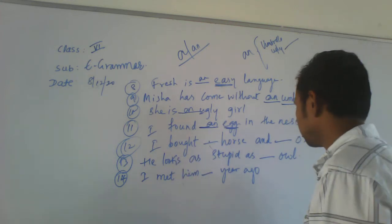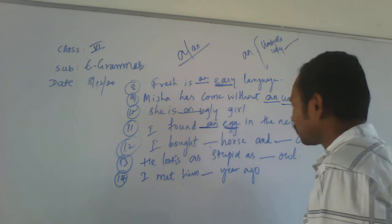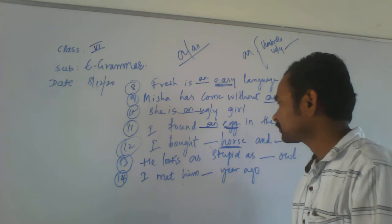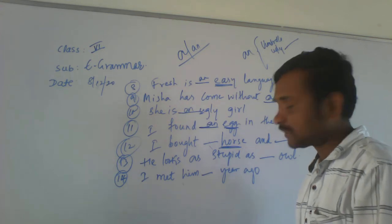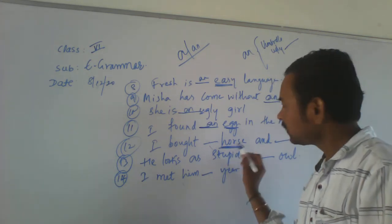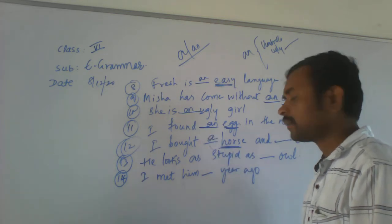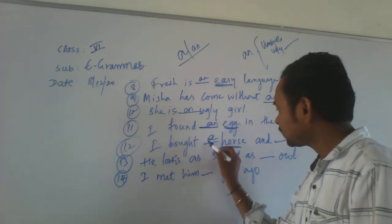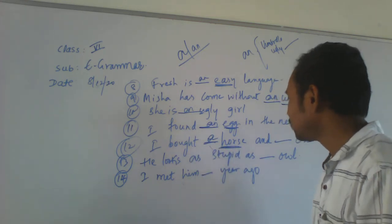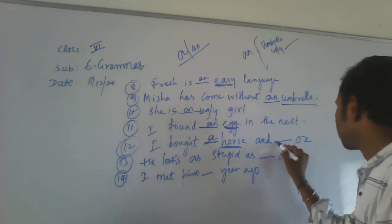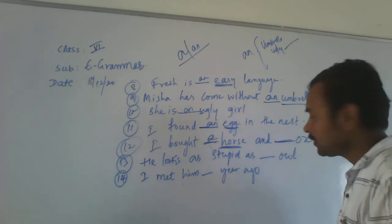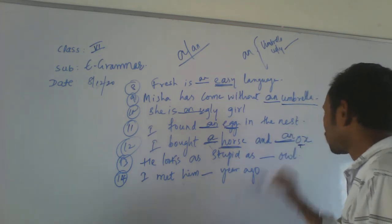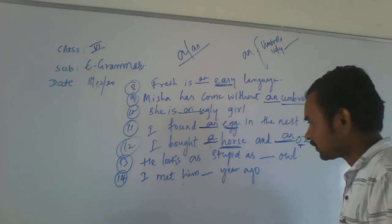I bought a blank ox. Now, observe this word — 'ox.' The word starts with a vowel — O. So what article do you have to write? AN. But wait, there's also the word 'horse.' H is not silent here, so H is a consonant. Where H is not silent, it is a consonant. So for 'horse' we use A. But for 'ox,' the word starts with a vowel, so AN ox.